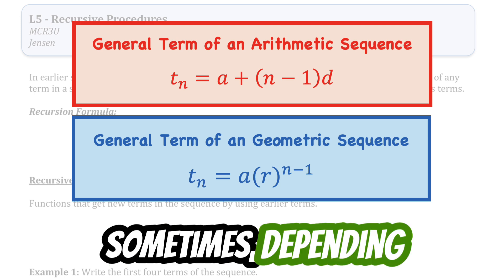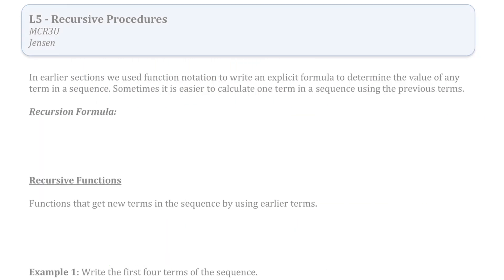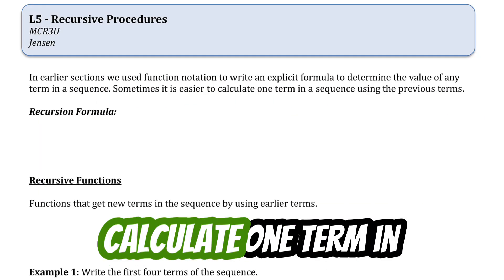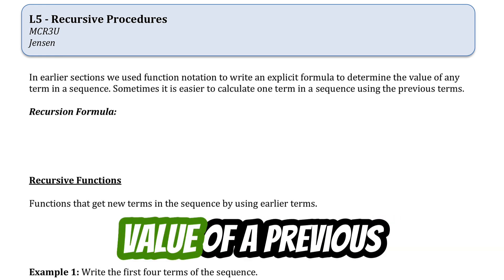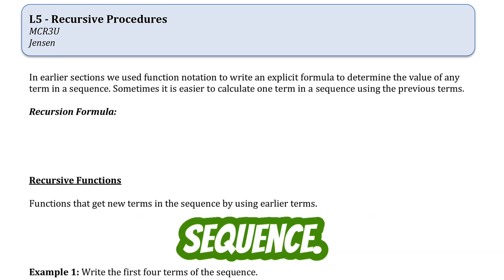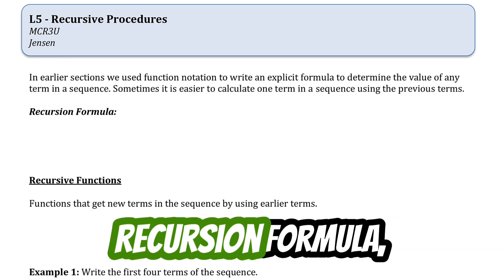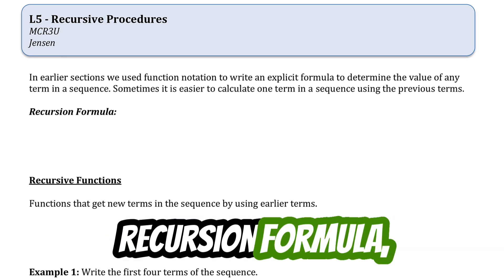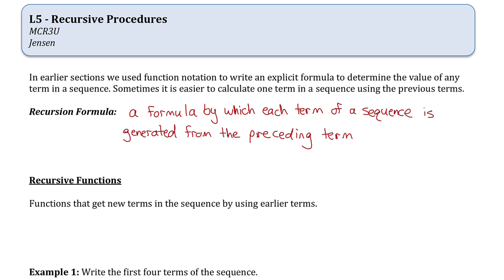But sometimes, depending on what pattern there is between the numbers in a sequence, it might be easier to calculate one term in a sequence using the value of a previous term or terms in the sequence. And when we do that, it's called using a recursion formula, which is just a formula by which each term of a sequence is generated from the preceding term or terms.